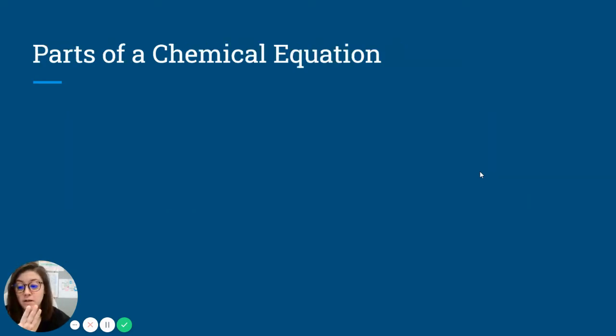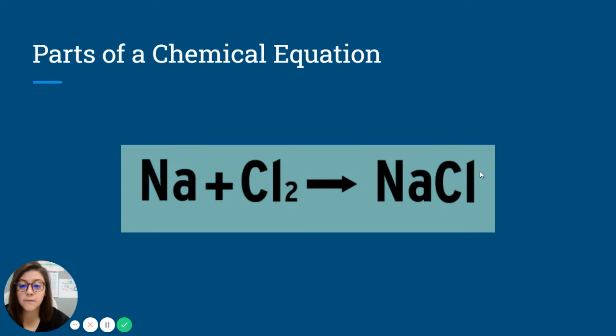There are three parts to a chemical equation. Super simple, not hard at all. So this is our chemical equation: Na plus Cl2, an arrow, and then NaCl.